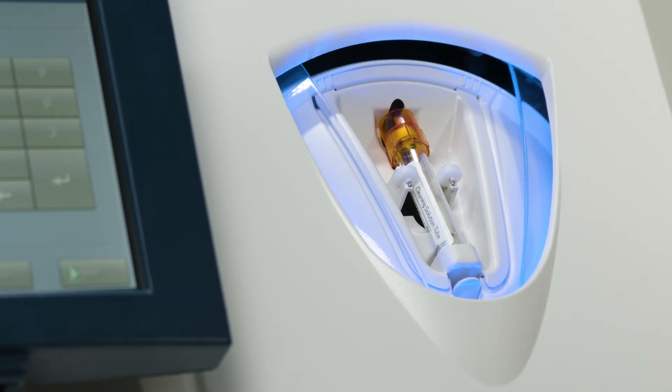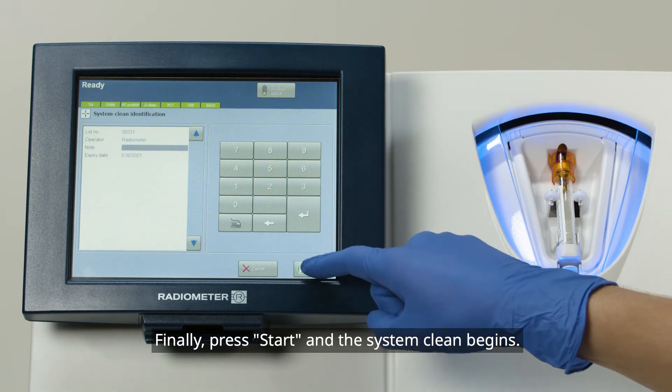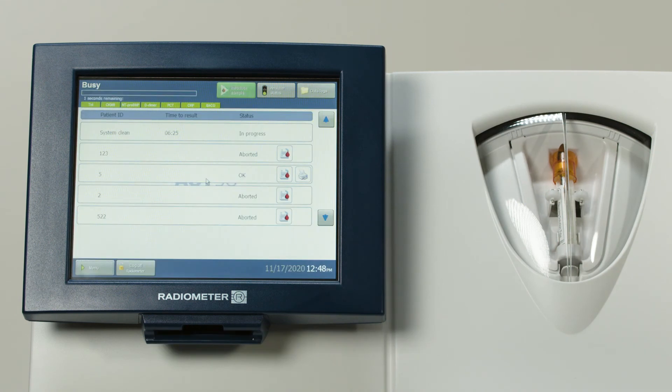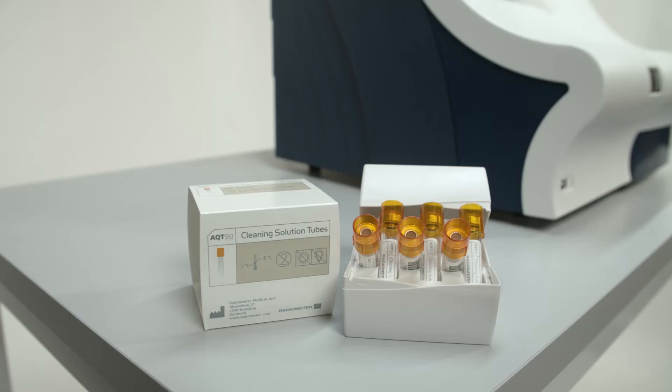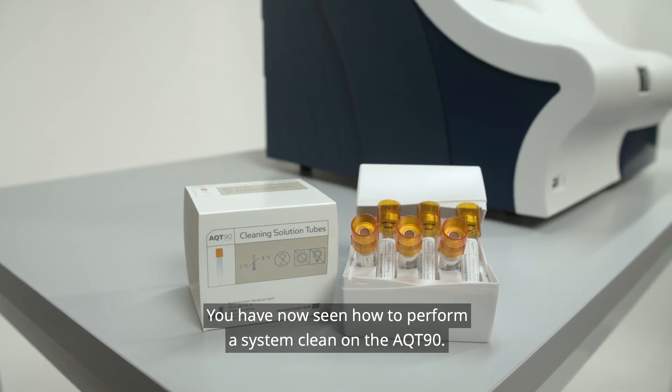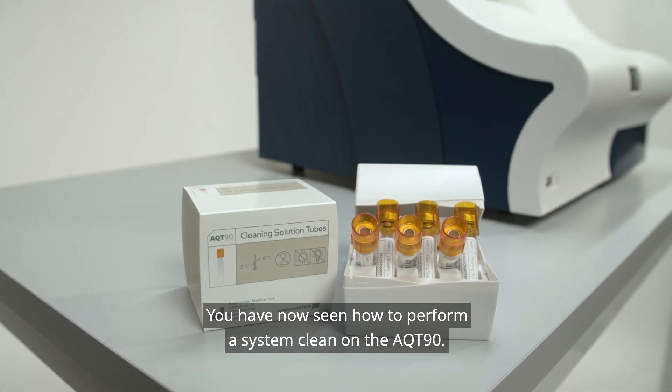Finally, press start and the system clean begins. The processing time is shown on the screen. You have now seen how to perform a system clean on the AQT 90.